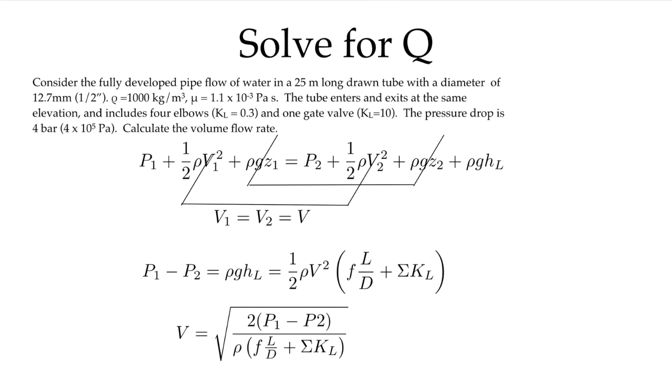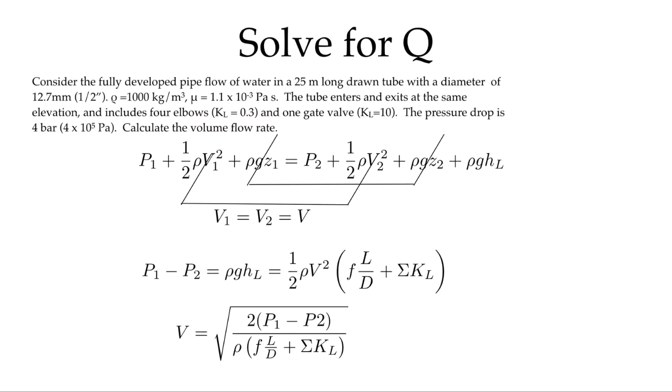And so the only addition, of course: as before, the velocity is constant through our same diameter section, so the kinetic energy term cancels out. The elevation change—we are told that it enters and exits at the same elevation—so the potential energy term cancels out. We're left with the same expression we had previously here for the pressure drop across the pipe.